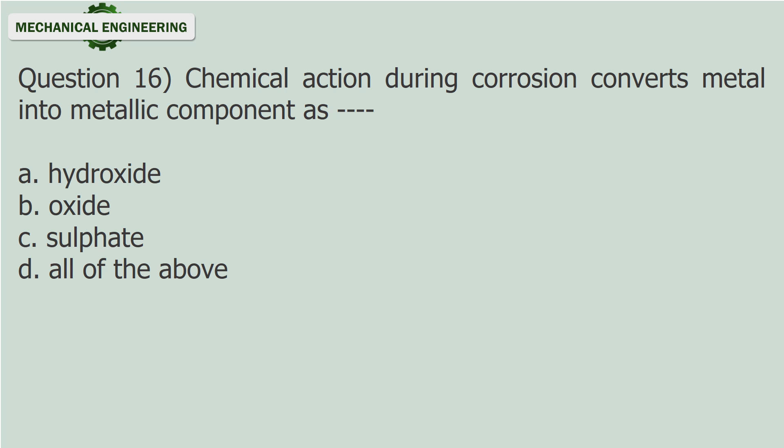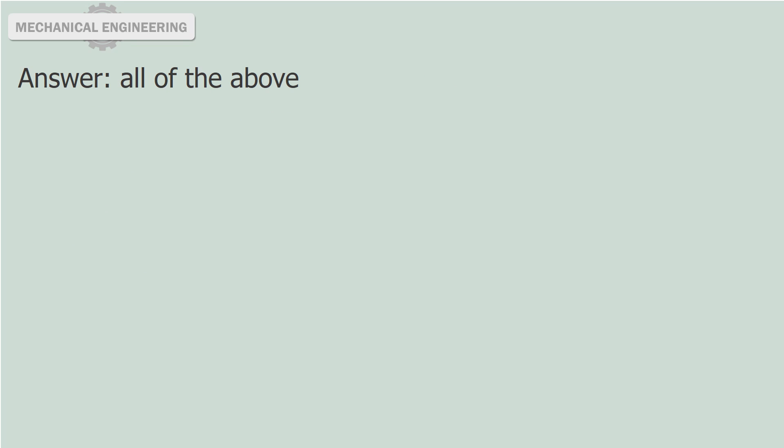Question 16: Chemical action during corrosion converts metal into metallic compounds as — (fill in the blank). A. Hydroxide. B. Oxide. C. Sulfate. D. All of the above. Answer: All of the above.